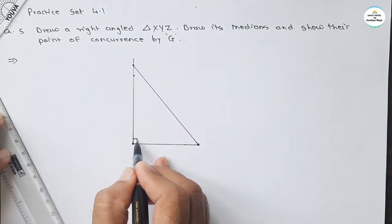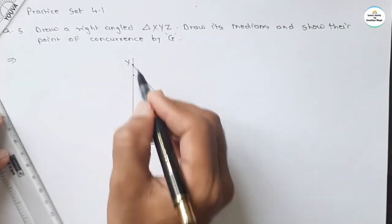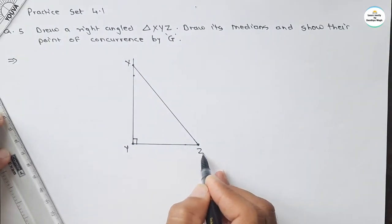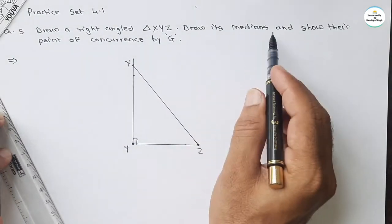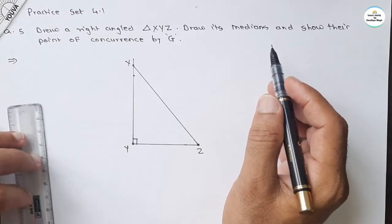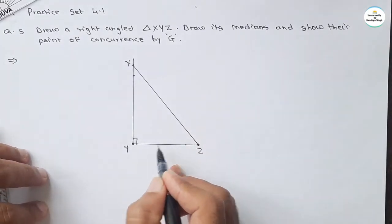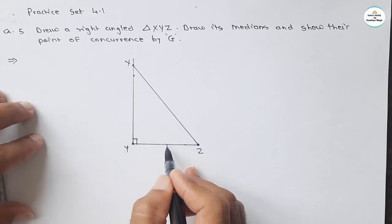This angle is a right angle. Name this XYZ. What is next asked? Draw medians. Medians means we have to draw the center point of segments and join that center point to the vertex.